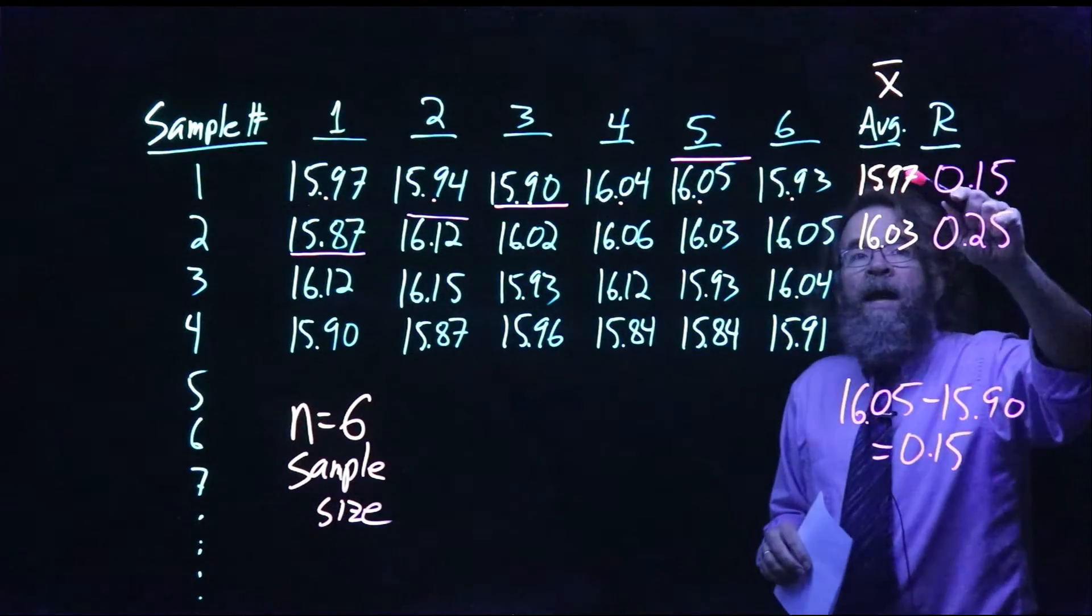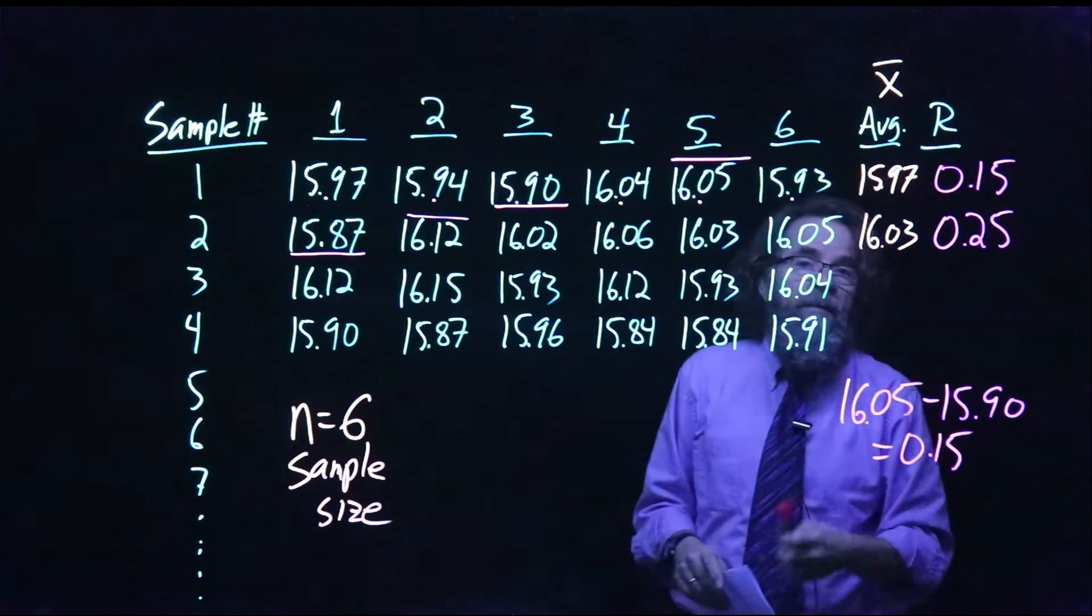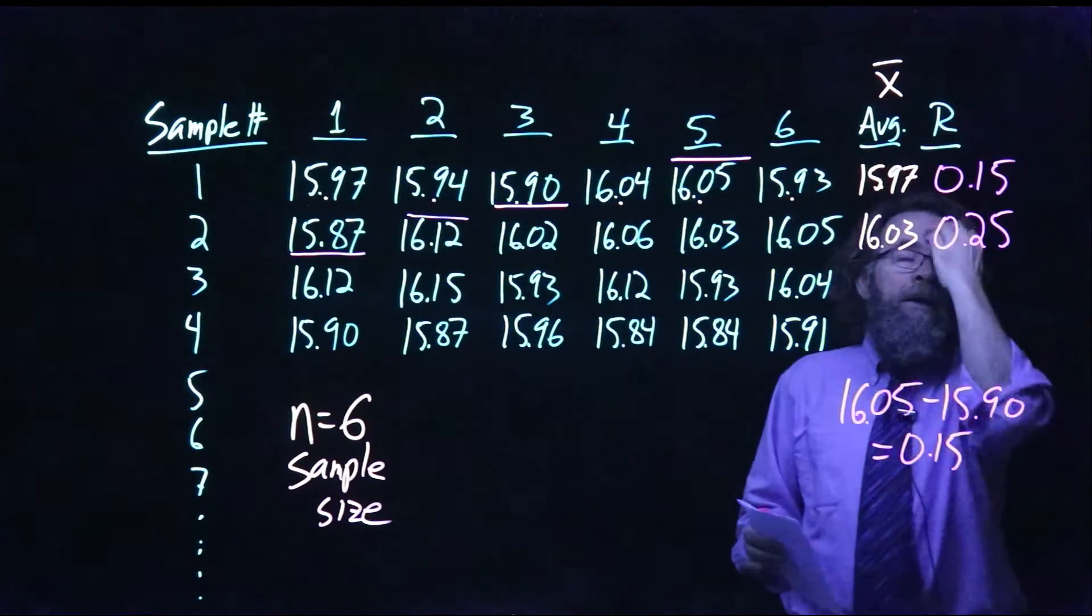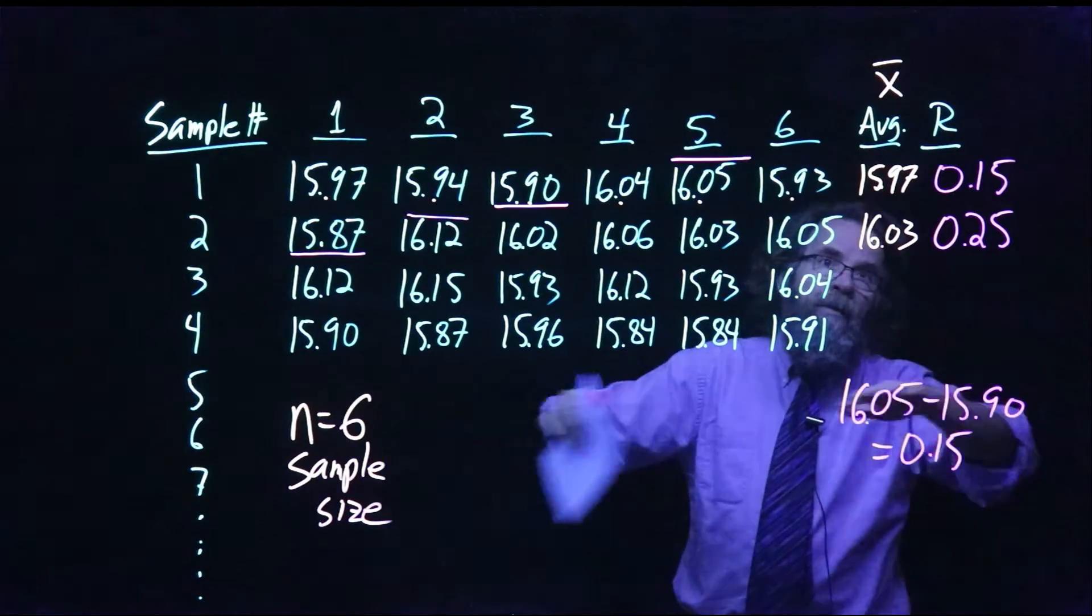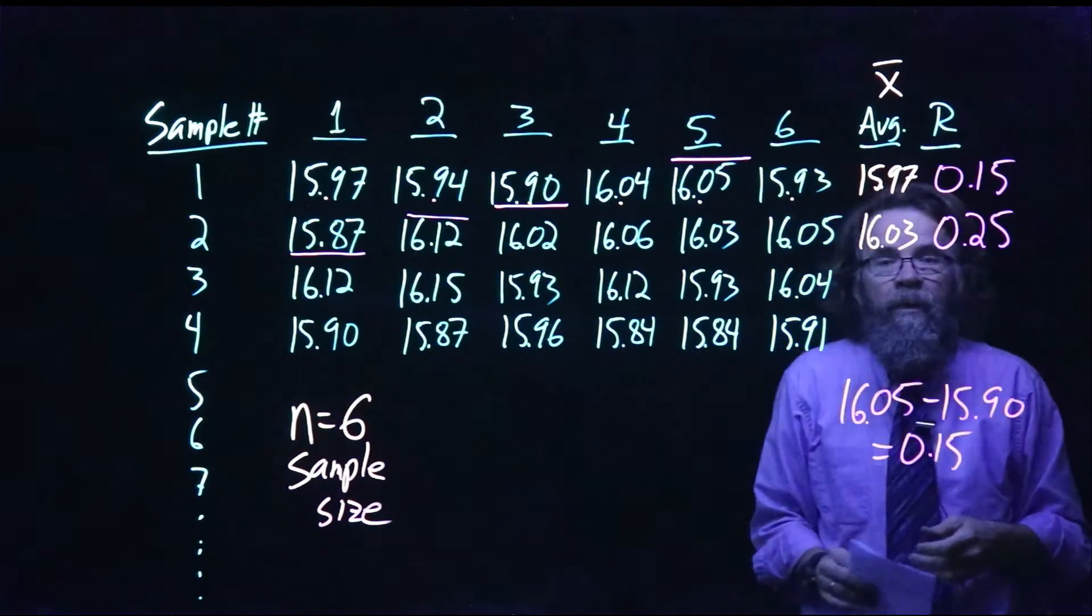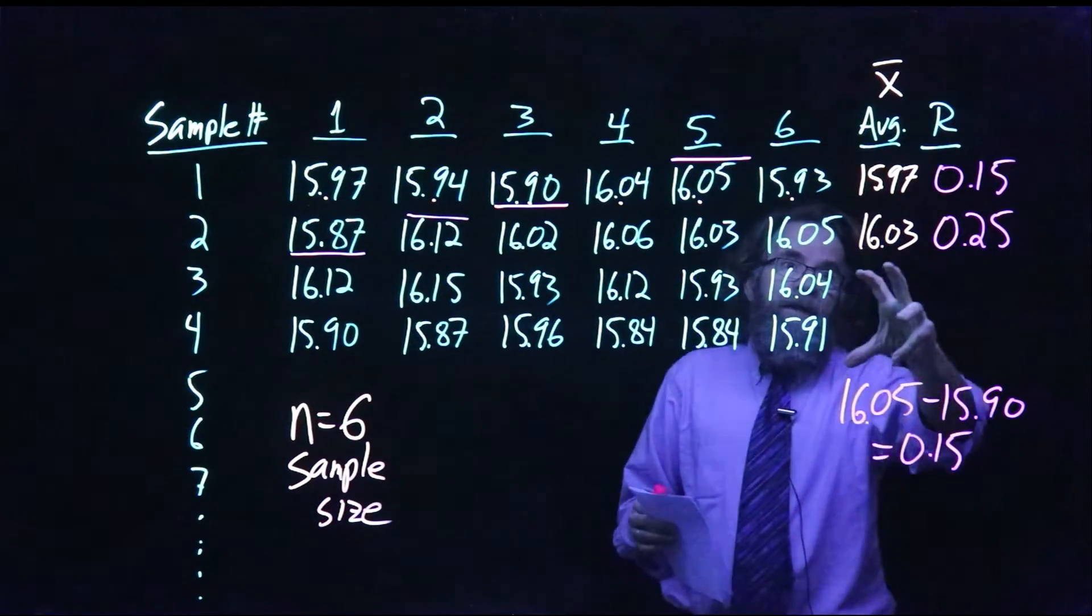In the X-bar chart, we're looking to see what happens to these averages. Are the averages staying consistent over time? That is, if we're making tortilla chips, does every bag of tortilla chips have an average around the 16-ounce target that we are shooting for? And that's an important thing to know because if that gets too big, we're giving away tortilla chips, and if that gets too small, we're shortchanging our customers.